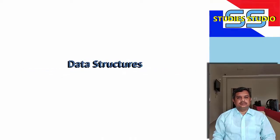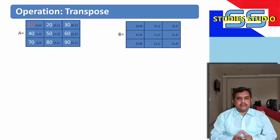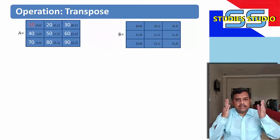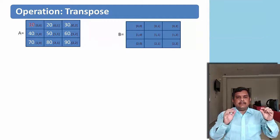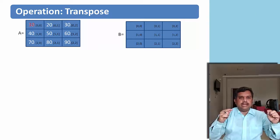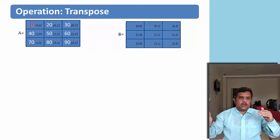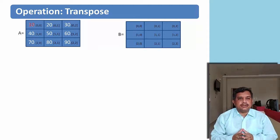So let us start matrix operations. Let us start with transpose of a matrix. In transpose of a matrix, we convert the row elements to the column elements. It means the first row elements I'll write as first column elements, then second row elements I'll write as second column elements, and the third row elements I'll write as third column elements. This is known as transpose of a matrix.